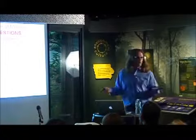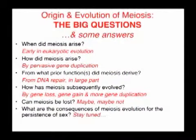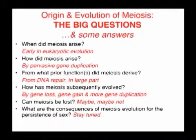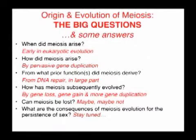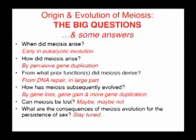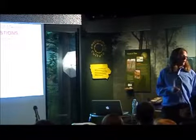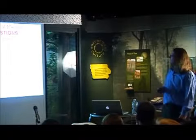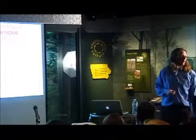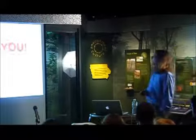So I'm going to answer the questions. When did meiosis arise? Very early. How did it arise? By lots and lots of gene duplication — it turns out new genes don't come out of nowhere; most meiosis genes evolved from other genes with roles in fixing DNA. How has it evolved? There's lots of gene loss — those holes in the slides — some new genes, and a little bit more gene duplication. We don't know the answer to whether meiosis can indeed be lost — those would be really interesting organisms to study. And the bigger question, that's a career question, so ask me when I'm an emeritus professor.